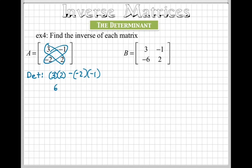Okay, so this would be six minus two, and that would equal four. And what you have to do is you have to check to see if this determinant equals zero. If it does not equal zero, then we can use this shortcut to find the inverse.